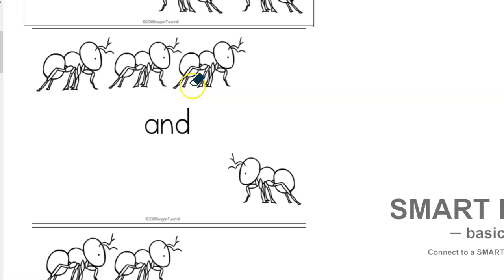So Nicholas, how many ants do I have right here? Three. Good job. And how many ants do I have right here? One. Good job. So three and one make four. Good job.